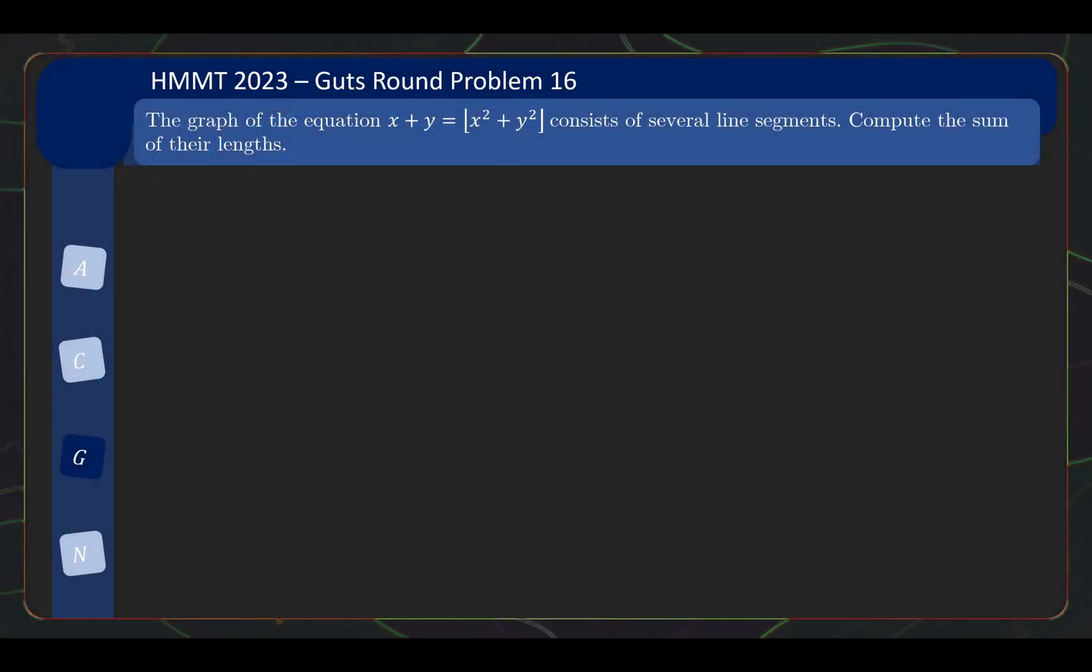So this problem is problem number 16 from the Guts Round, and here's the problem statement. The graph of the equation x plus y equals floor of x squared plus y squared consists of several line segments. Compute the sum of their length.